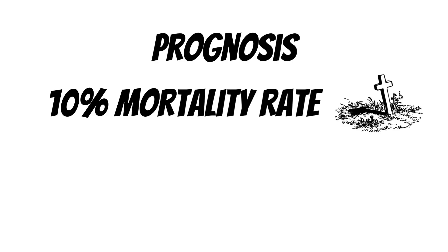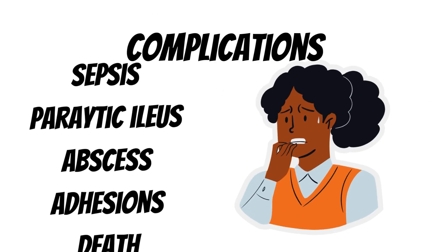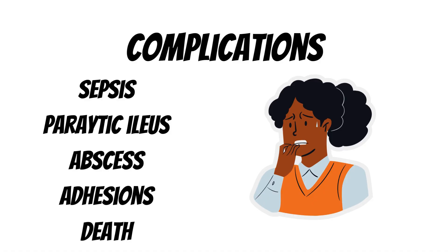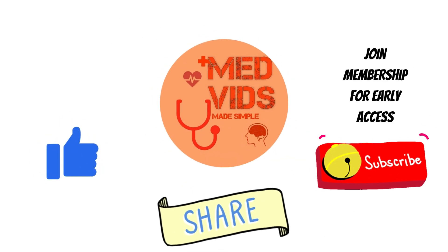There is usually a 10% mortality rate associated with peritonitis, however it can be brought down by proper medical and surgical management. Complications can include septic shock, paralytic ileus which is absent bowel movements occurring as a defensive mechanism, abscess formation which is a collection of organized pus, adhesions of the abdominal contents, and sometimes death of the patient.